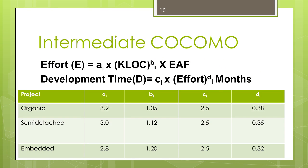The intermediate COCOMO estimation model is given by expressions for finding the effort and development time. The constants AI, BI, CI, DI are the constants for intermediate COCOMO — where I stands for intermediate. A new term, EAF (Effort Adjustment Factor), is introduced. The EAF can be calculated using the 15 cost drivers introduced in this intermediate COCOMO model.